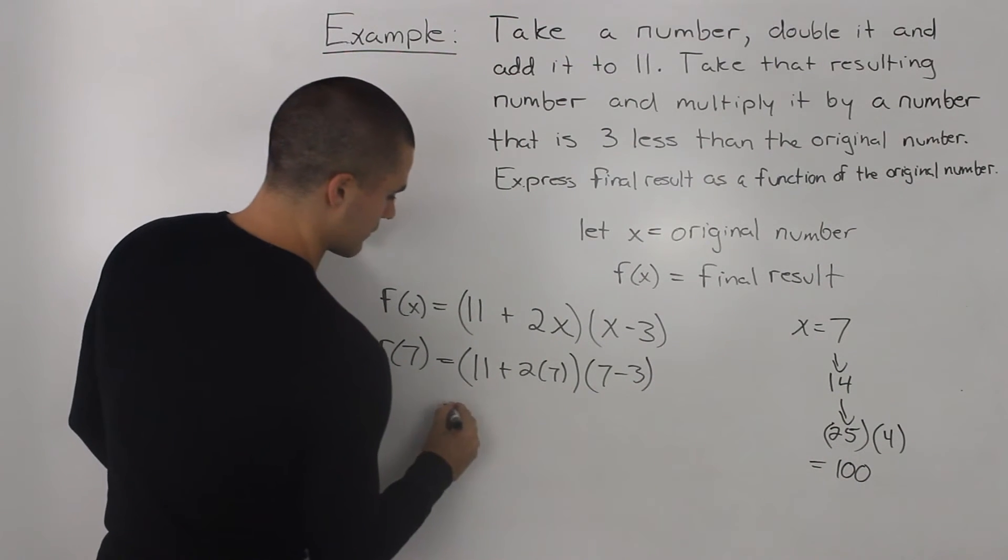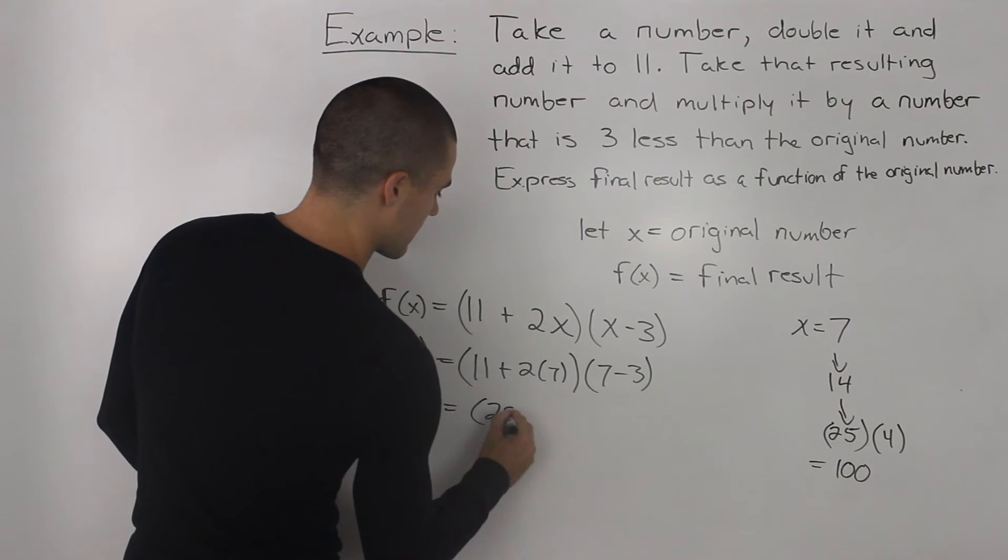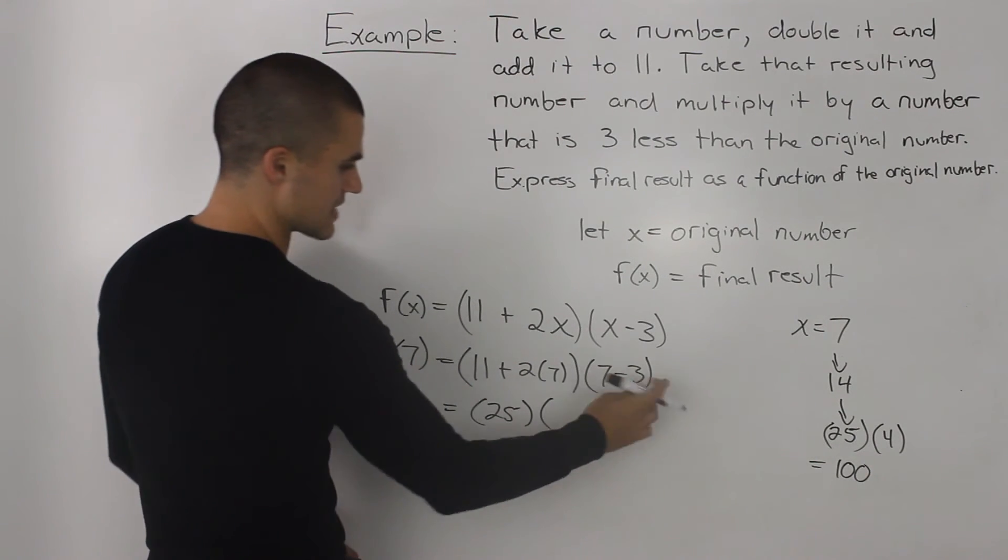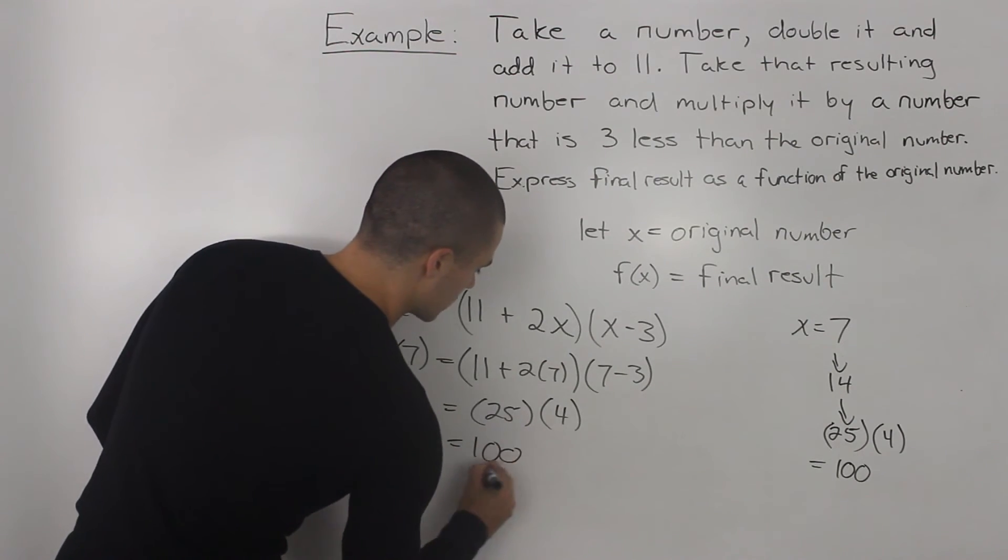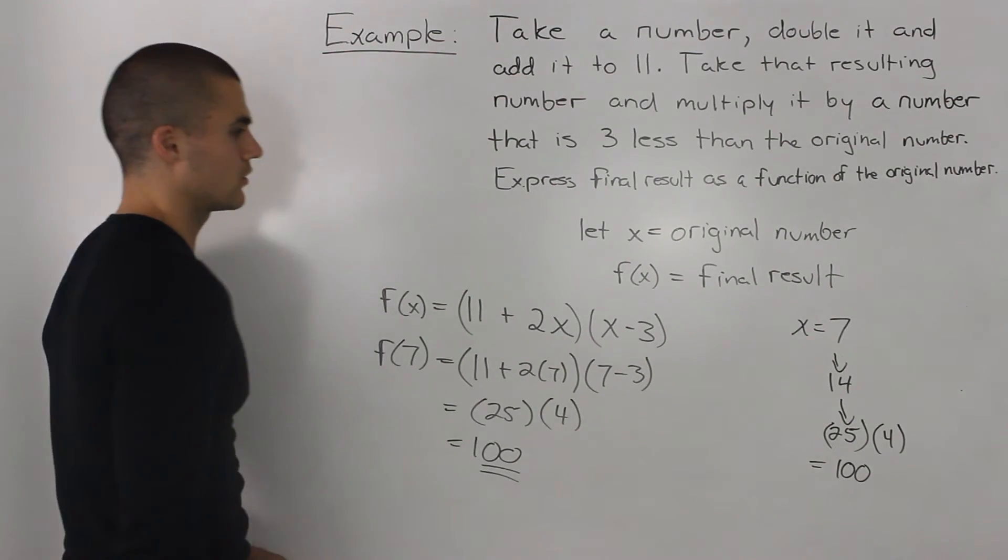So, 2 times 7 is 14 plus 11 is 25, and then 7 minus 3 is 4, and we end up getting the same result, 100, that we got over there. So, it worked.